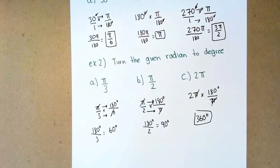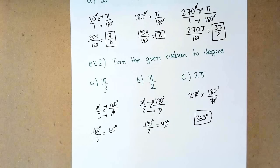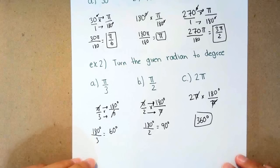So when you're going from degrees to radians or radians to degrees, you have to look at what you want to get rid of, and you're either going to multiply by pi over 180 or 180 over pi.